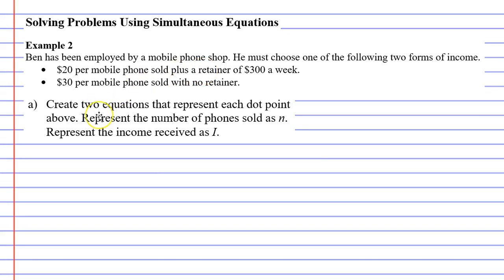Now, question A says, create two equations that represent each dot point. As we do it, we're going to represent the number of phones sold using the pronumeral n, and we're going to represent the income received using the pronumeral I. So on the left, we'll call this equation 1, and this is going to represent the equation for the first dot point. And our second equation, which will be for the second dot point, we'll put that on the right. We'll call that equation 2.